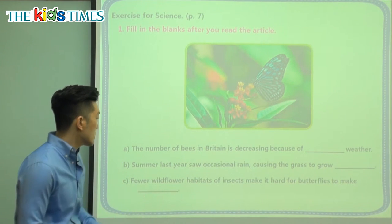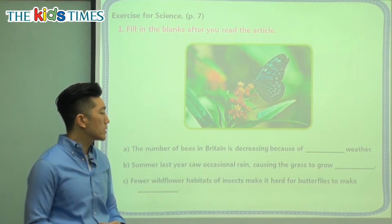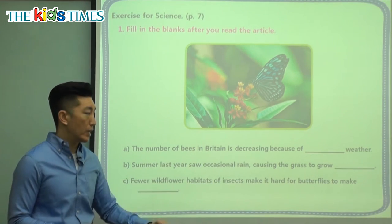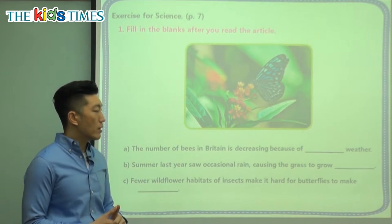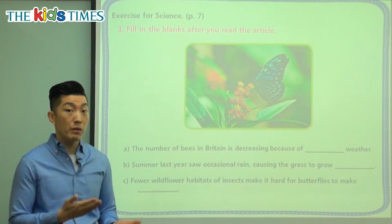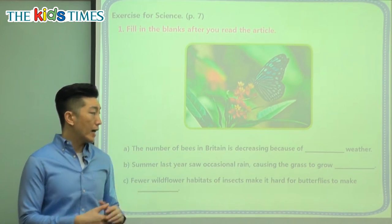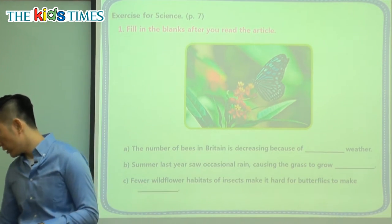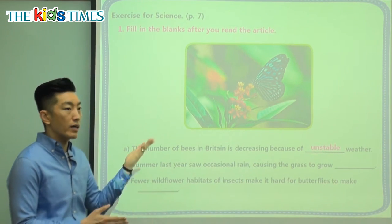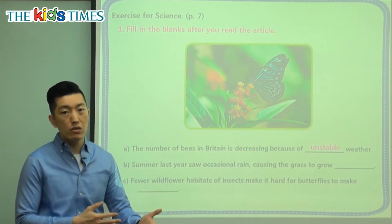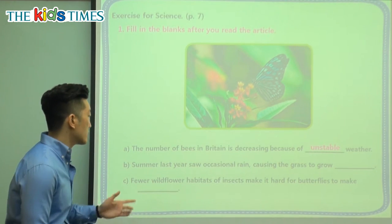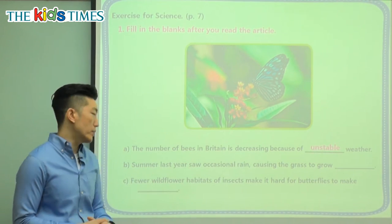Let's take a look at the questions for today. The number of butterflies in Britain is decreasing — meaning going down — because of what kind of weather? Is it hot weather, or remember we said it's up and down, constantly changing? So that means unstable weather. Because of the weather going hot and snowy and rainy and dry, a lot of the butterflies are disappearing.